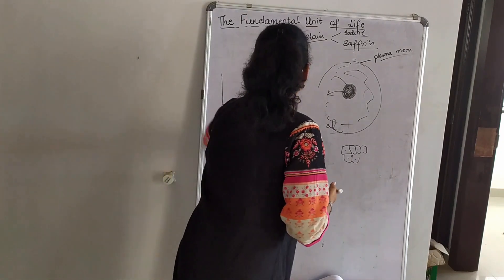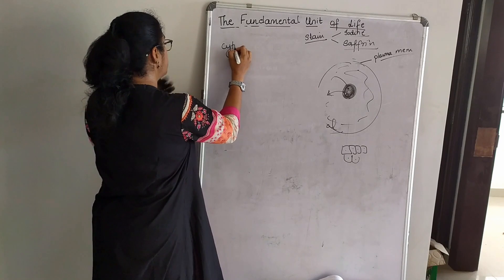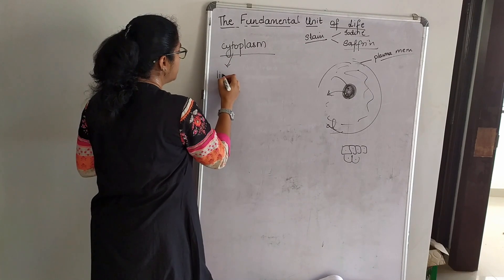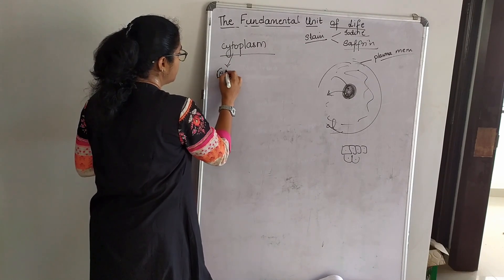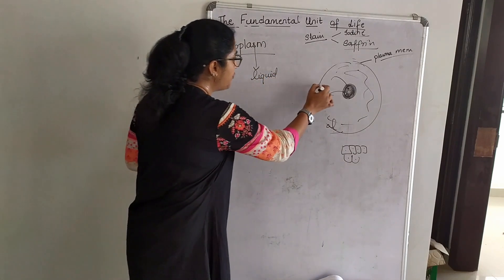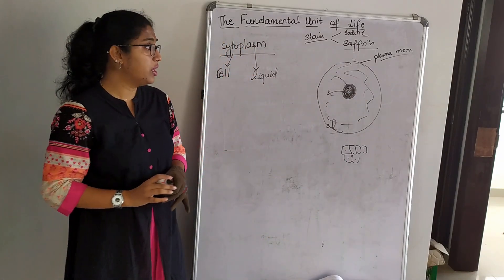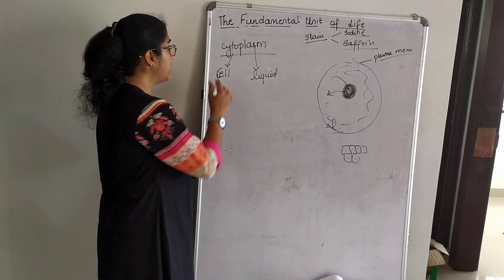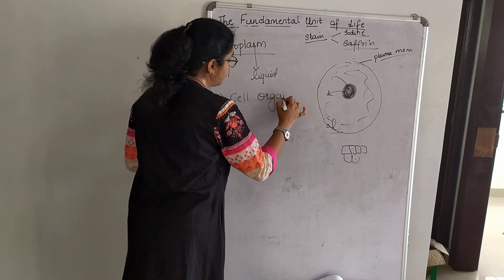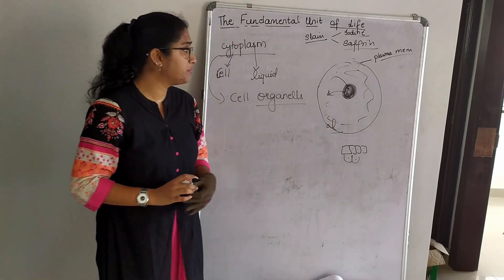The last component is cytoplasm. 'Cyto' means cell and 'plasm' means liquid, so cytoplasm is the jelly-like substance filling the cell. Cytoplasm consists of cell organelles.